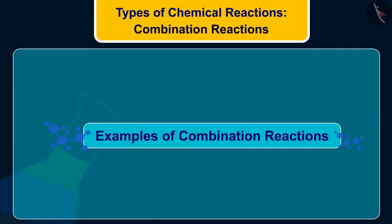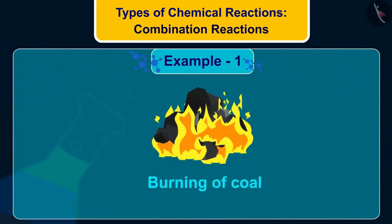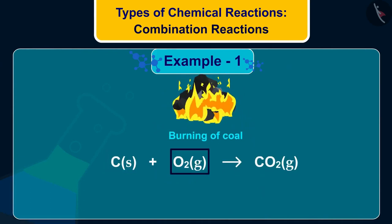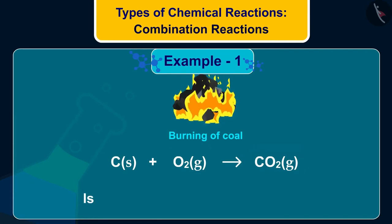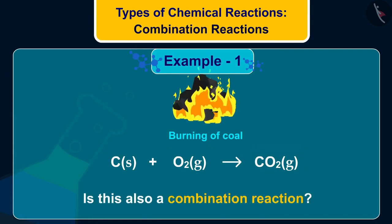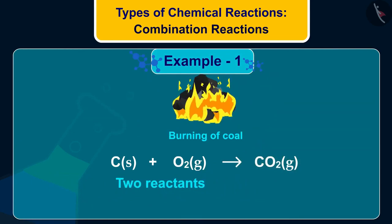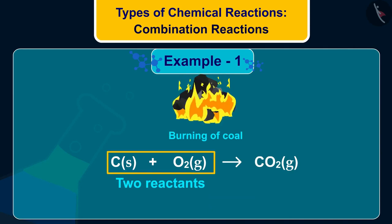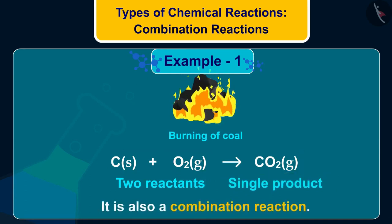Let us discuss a few more examples of combination reactions. The first example is that of burning coal. In this, coal — which is carbon — reacts with oxygen to form carbon dioxide. This is also a combination reaction because two reactants, that is carbon and oxygen, are combining to form a single product, which is carbon dioxide. Hence, it is a combination reaction.